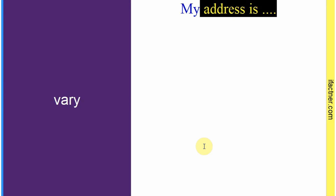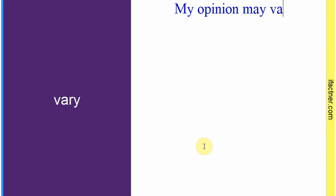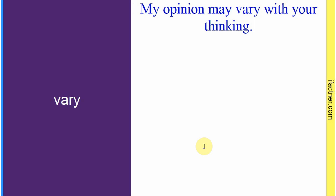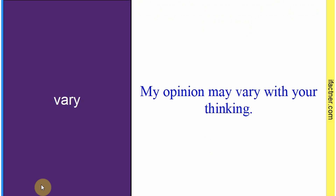Word hai: 'vary'. Sentence: 'My opinion may vary with your thinking.' Jo mera opinion hai woh aapki soch se alag ho sakta hai. Toh 'vary' ka matlab hai 'alag hona', thoda thoda sa change hona — 'vary' usi se 'variation' nikla hai. Sentence banaaya: 'My opinion may vary with your thinking.'